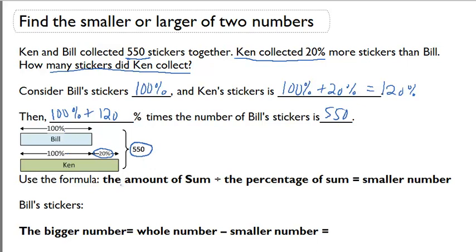Now we can use the formula. The amount of sum divided by the percentage of sum has to equal the smaller number.